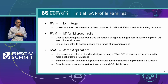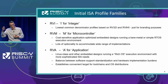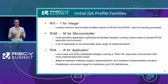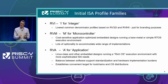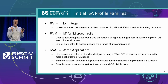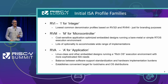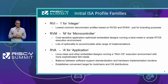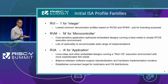There will actually be three profile families. The first is a very basic, almost legacy kind of thing: the RVI family of profiles, which are the lowest common denominator profiles based on RV32I and RV64I. They're primarily just for branding purposes. The more notable profiles are the RVM and RVA profiles, where RVM represents the microcontroller realm of designs — cost-sensitive, application-optimized embedded designs running bare metal or a simple RTOS execution environment.